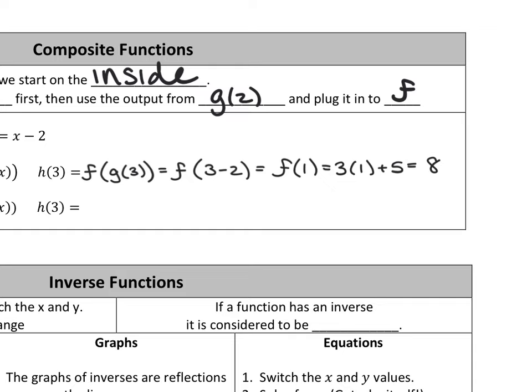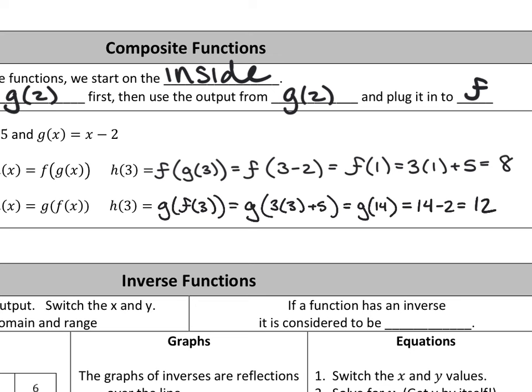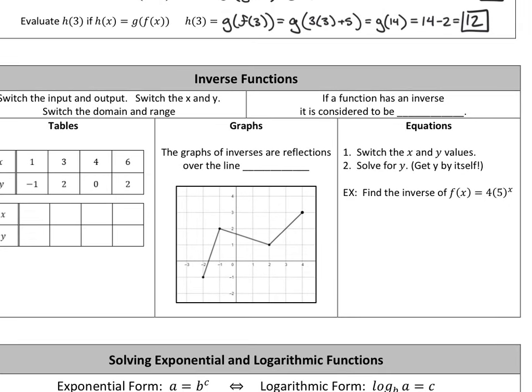For the next question, H(3) is asked again but now H(x) = G(F(x)) — the order is switched. This gives a different result: the answer is 12. Remember, on FRQs, do not box your answers.